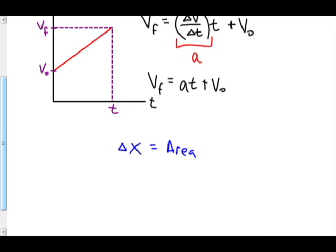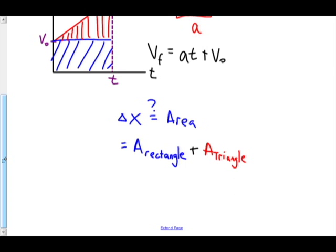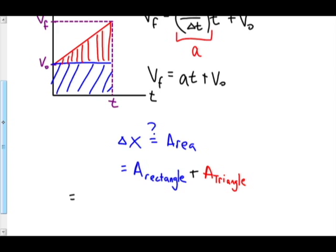will be the area of a rectangle, which we will show here, plus the area of the triangle. This guy right up here. So let's have a. The area of the rectangle would be found by taking base times height. So in this case, t times v naught. The area of the triangle we would find by taking one half base times height. So in this case, one half t. The height will be vf minus v naught.